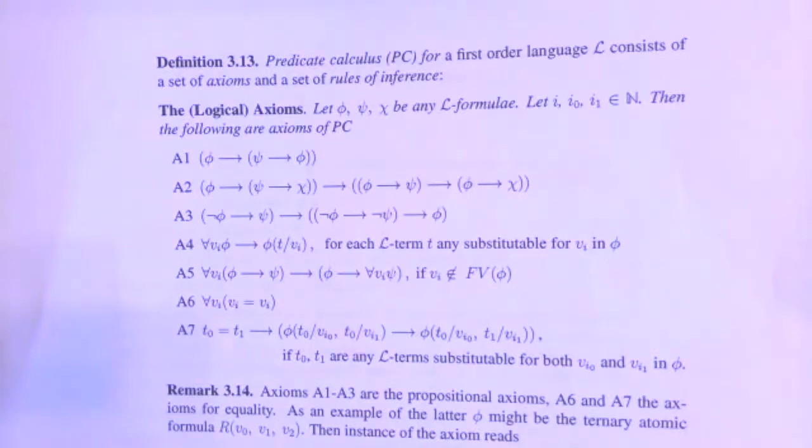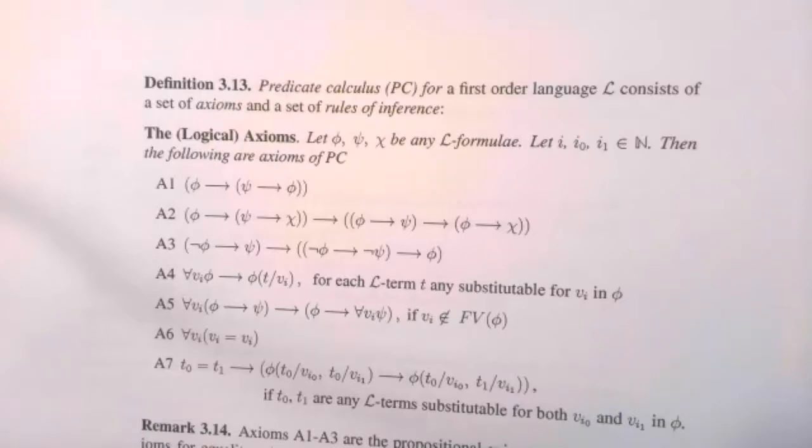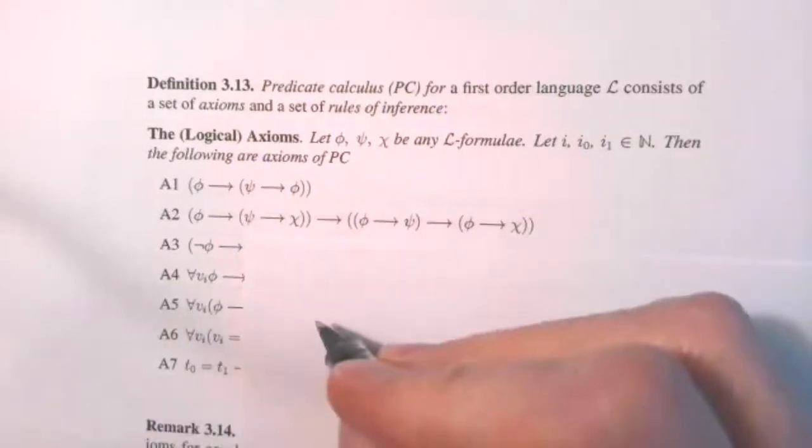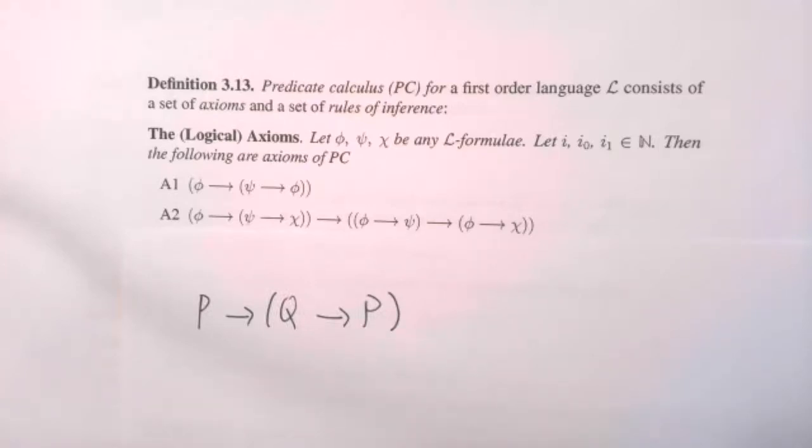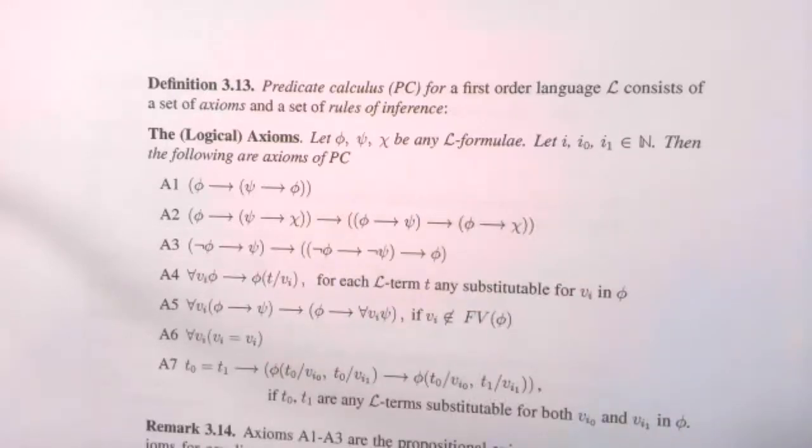What we'll do first is go back and review the logical axioms and rules of proof for a Hilbert-style deductive system. This is in section 3.2 of Charles Morgan's notes, page 44. What we have here is predicate calculus PC for first-order language. It consists of a set of axioms and a set of rules of inference. The logical axioms form two groups. The first three are actually all instances of tautologies. I could think of A1 as being an instance of p implies q implies p. So A1 is a tautology.